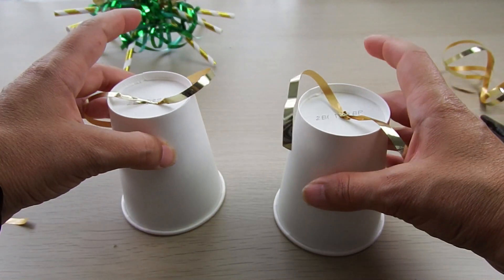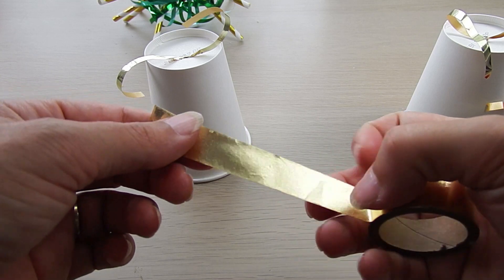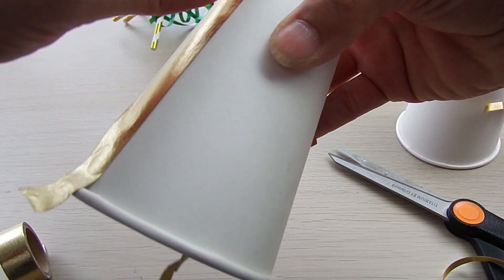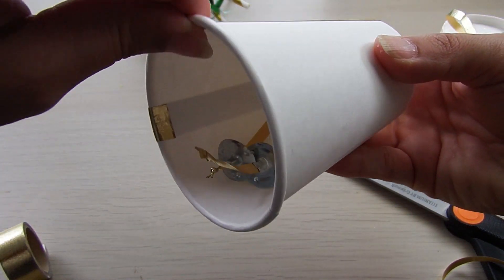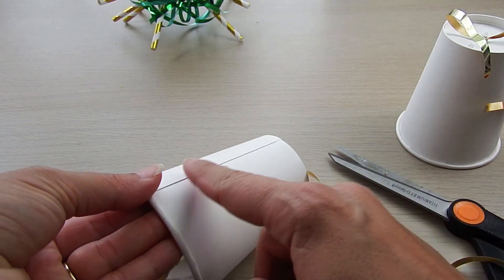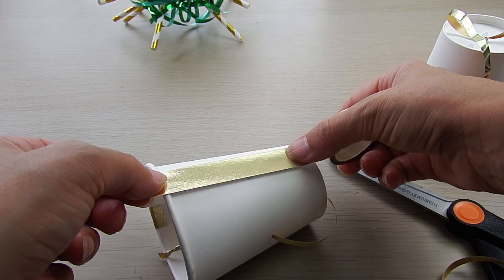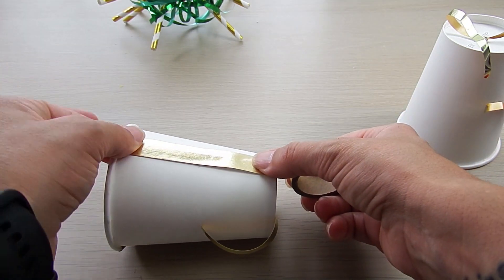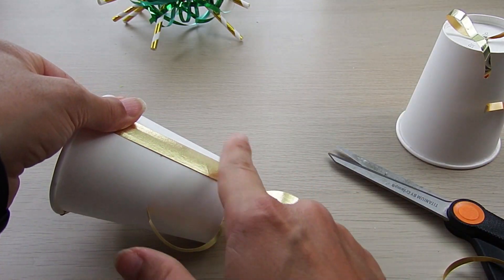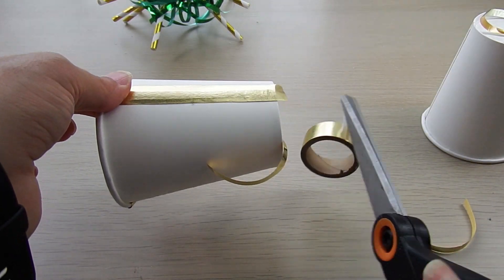Now I decided to decorate my bells with some washi tape. I had this beautiful gold that will match the theme of my Christmas decoration. Of course you can change the colors, go crazy, you could even use some glue, some nail polish. What you could do if you have a glue gun is put some dots with the glue and then when it's dry spray with gold spray paint. That would be really nice.